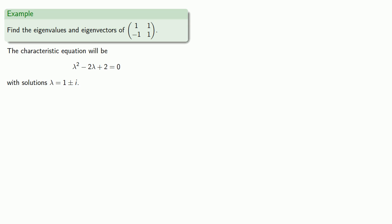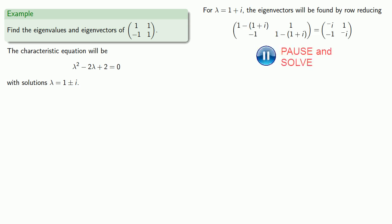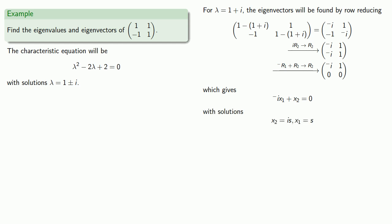And we can find our eigenvectors in the usual fashion. The only real difference here is that we're dealing with complex coefficients. So for lambda equals 1 plus i, the eigenvectors will be found by row reducing our matrix. And we get solution negative i times x1 plus x2 equals 0. And that gives us parameterized solutions. And if we let s equal 1, we get the eigenvector.